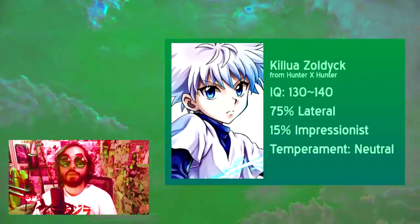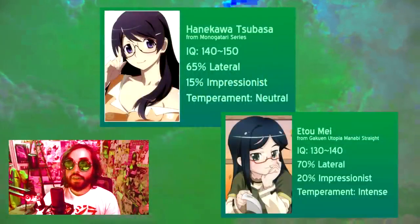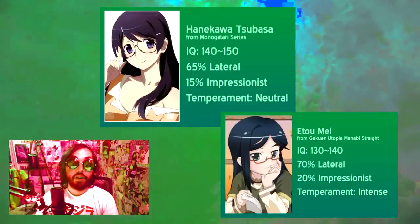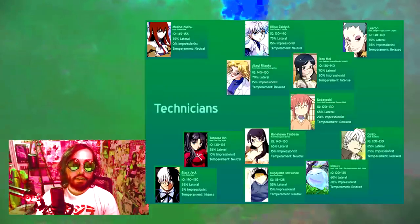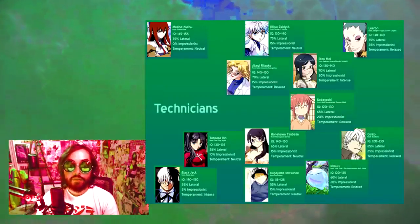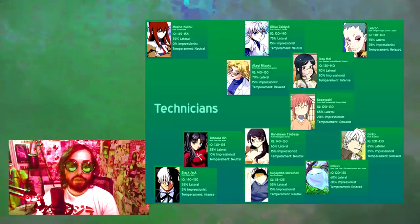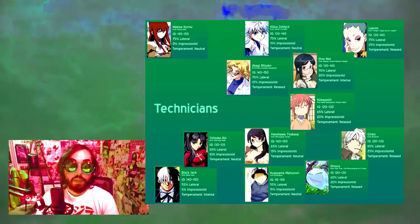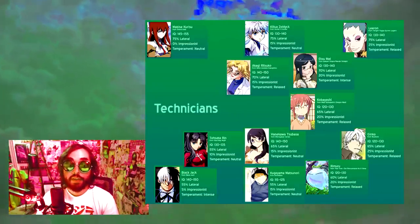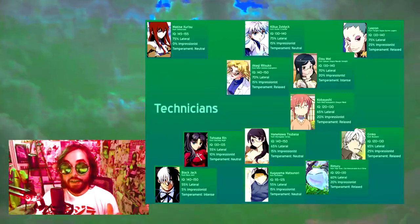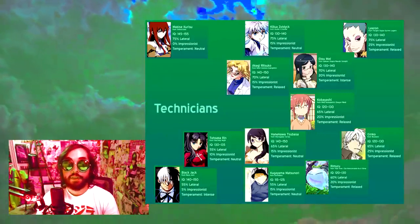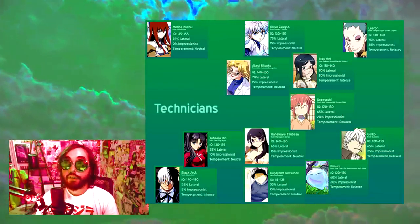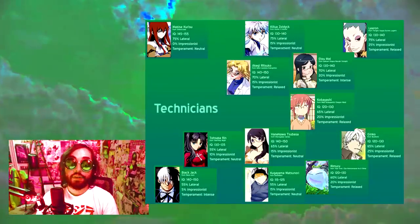Rimuru from Tensura uses his technological prowess to fix monster society in his isekai world. Ritsuko from Evangelion and Liron from Gurren Lagann need their lateral thinking abilities just to keep up with the data outputs for all the giant robots they oversee. It's worth noting that because lateral thinkers have somewhat faster and more chaotic minds, they can preoccupy themselves with their own thoughts more easily, and will more quickly become bored with things that don't interest them. If they don't have the IQ to recognize this, there's a decent chance they may be diagnosed with disorders such as ADHD, Asperger's, or autism.